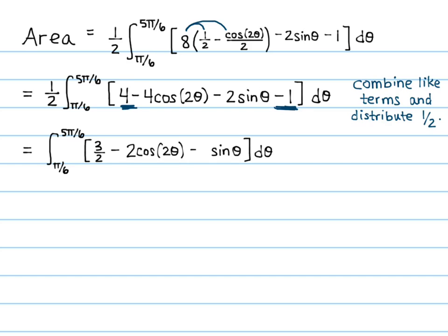Now we've done all the algebra and just need to take the antiderivative. We get three halves theta minus sine of 2 theta plus cosine of theta, evaluated from pi over 6 to 5 pi over 6.